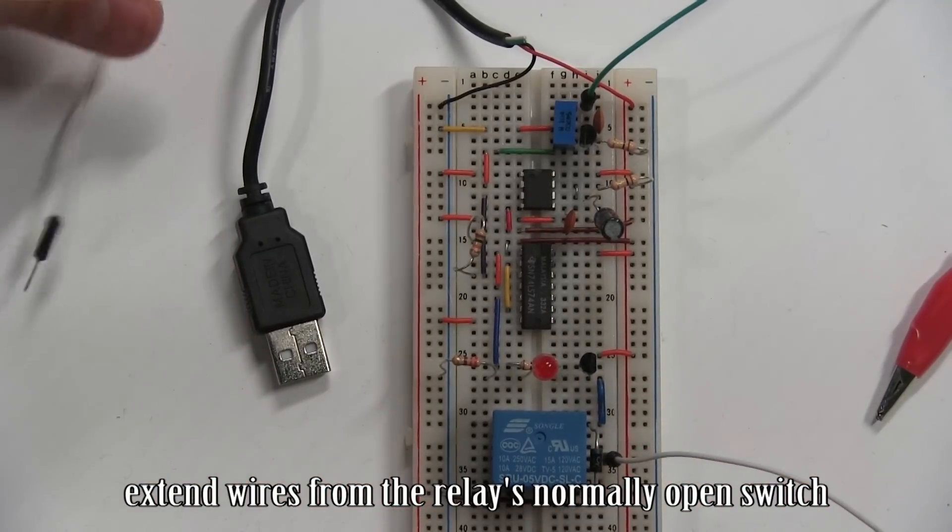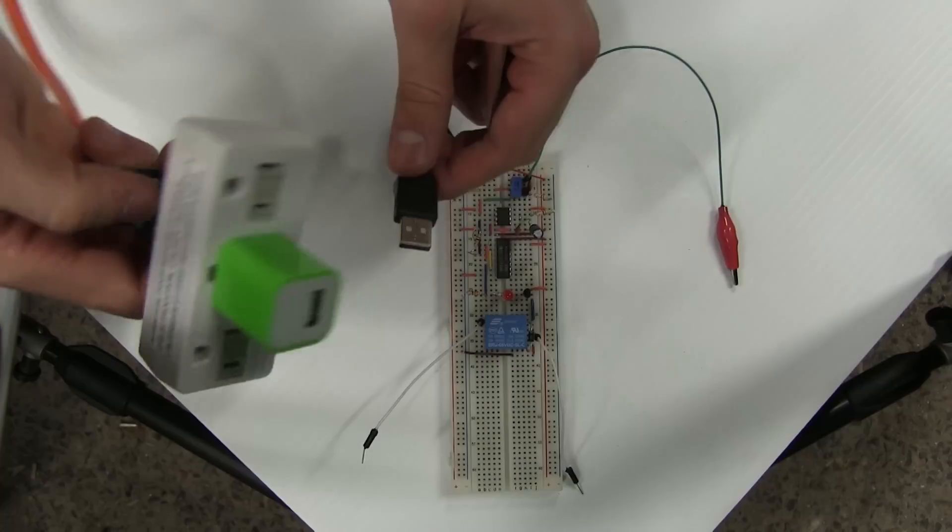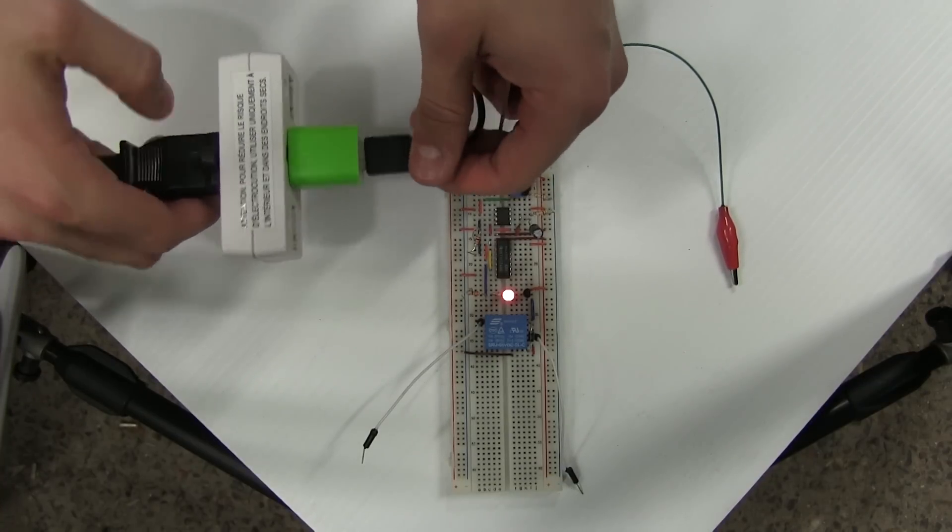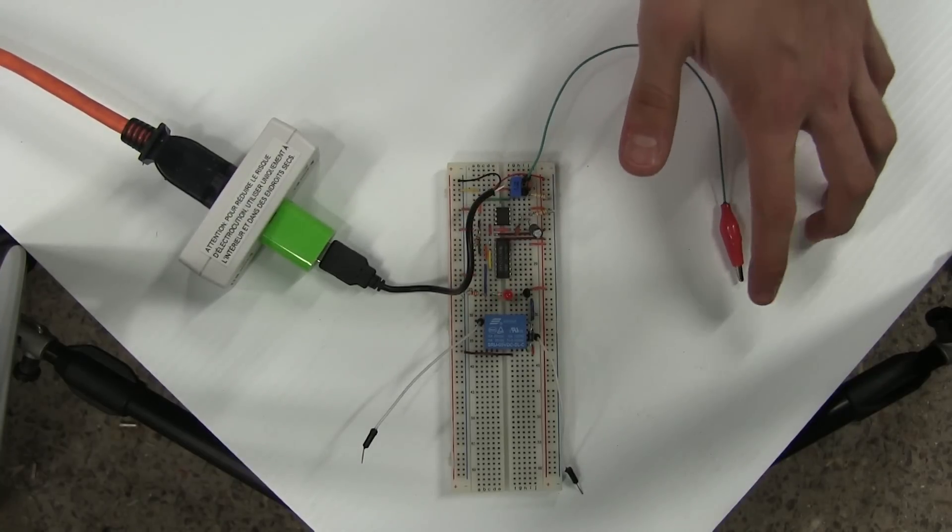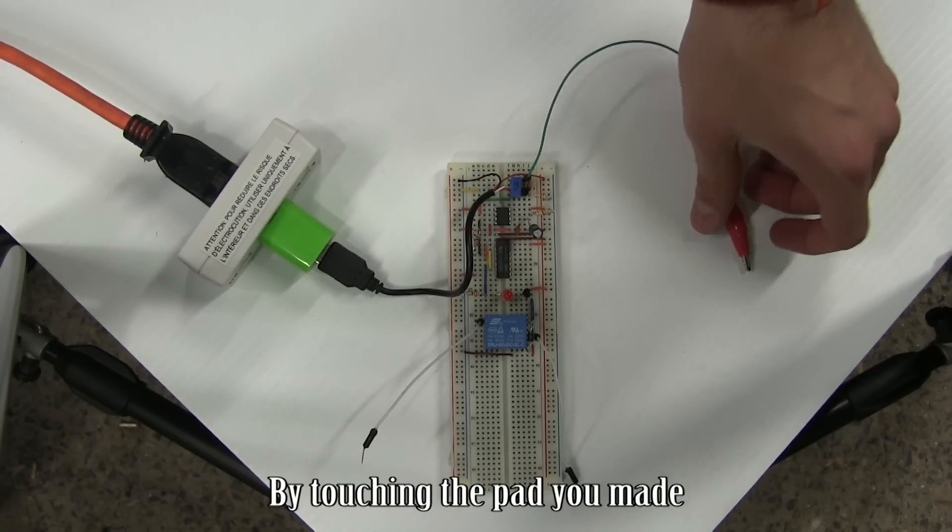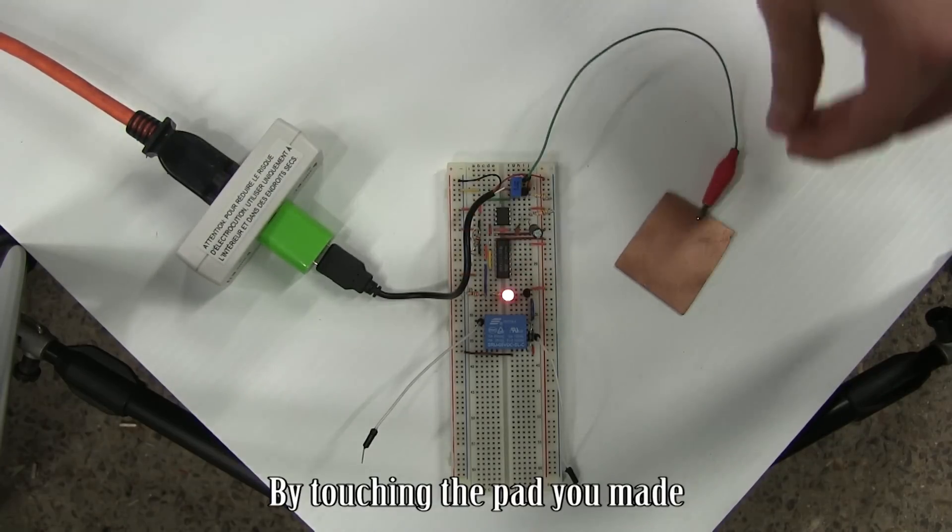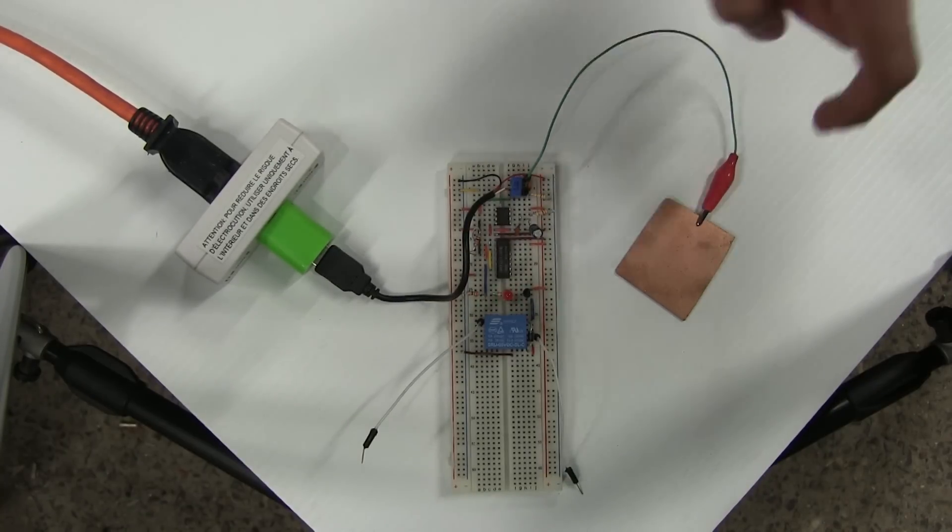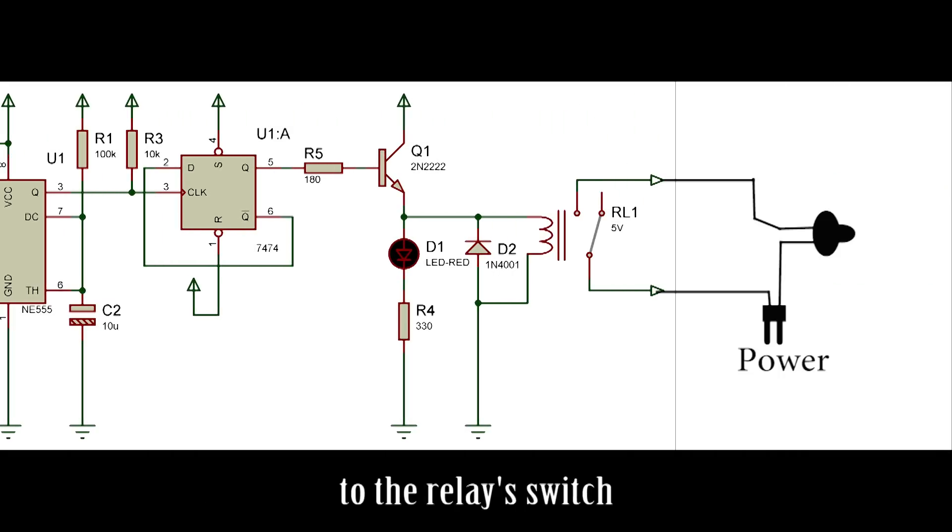Extend wires from the relay's normally open switch. Now let's test the circuit. Connect the USB cable to a charger. You should now be able to turn the LED on and off by touching the pads you made with the relay's switch.